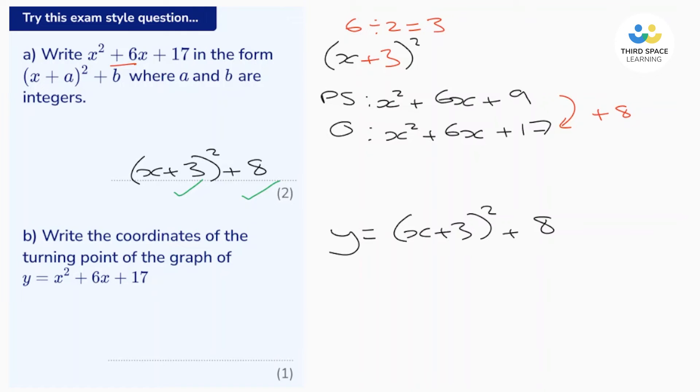Now we can see that because this is a positive quadratic that the graph will be a U shape. So the turning point will be at this point here. At that point we want y to be as small as it possibly can be.